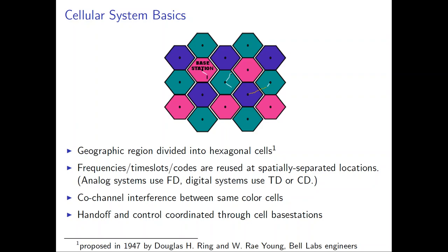This is called co-channel interference — between same-color cells. If you transmit two signals on the same frequency, they interfere with each other and you receive the combination, not your own signal. But if you can avoid interference, you can keep reusing the frequency over and over to serve more customers. Frequencies, time slots, and codes are reused at spatially separated locations.